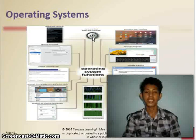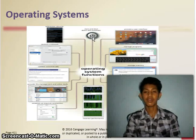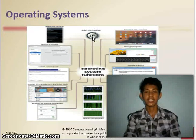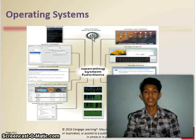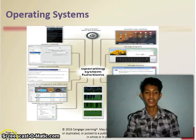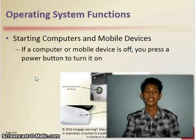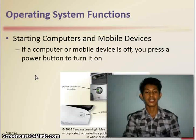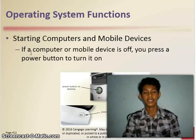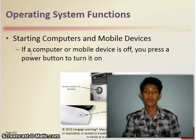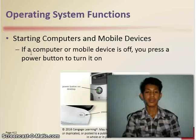When you press the power button, the mobile device or computer turns on or off. This is operating system function number one: starting computers and mobile devices. If a computer or mobile device is off, you press a power button to turn it on.